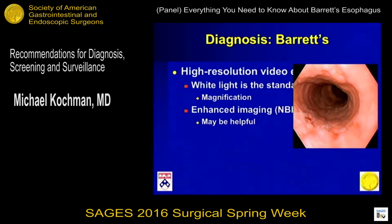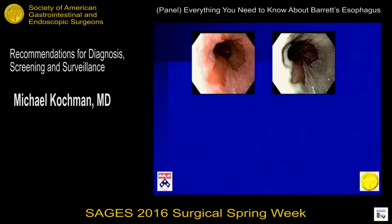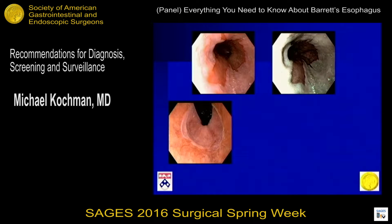Enhanced imaging with NBI may be helpful to identify Barrett's. We want a slow exam — one minute per centimeter. Erosive changes are quite a problem for the pathologist. It's our fault as endoscopists if we give them biopsies from inflamed areas; put the patient on a PPI and bring them back 8 to 12 weeks, then biopsy them. These pictures show the enhancement you can have with NBI and high-def to identify the junction. Retroflex views are also helpful and required.